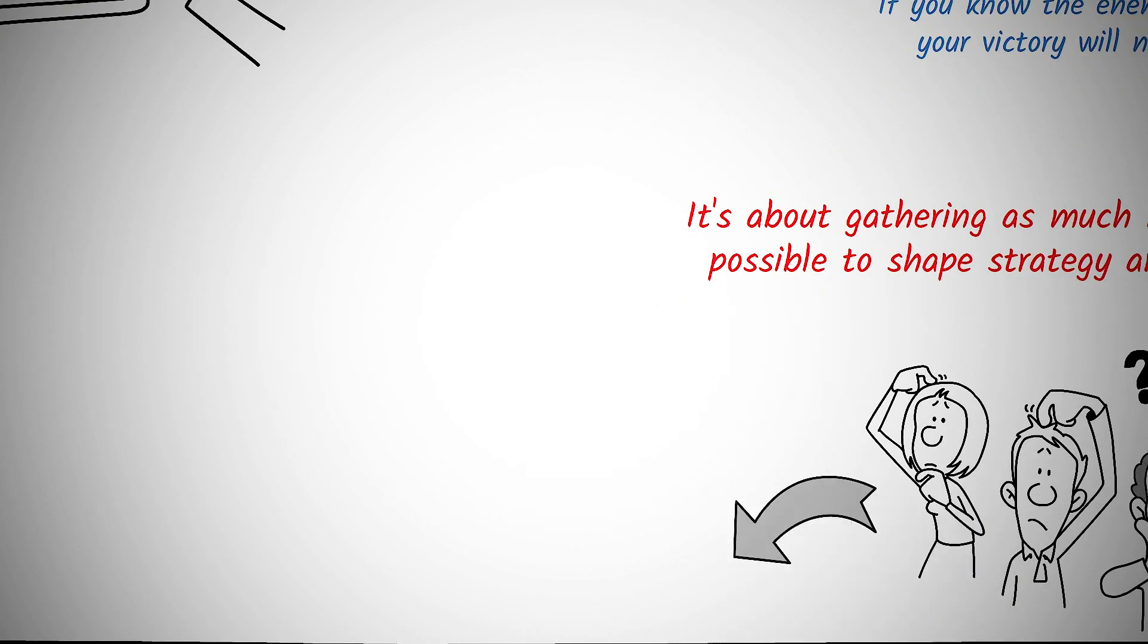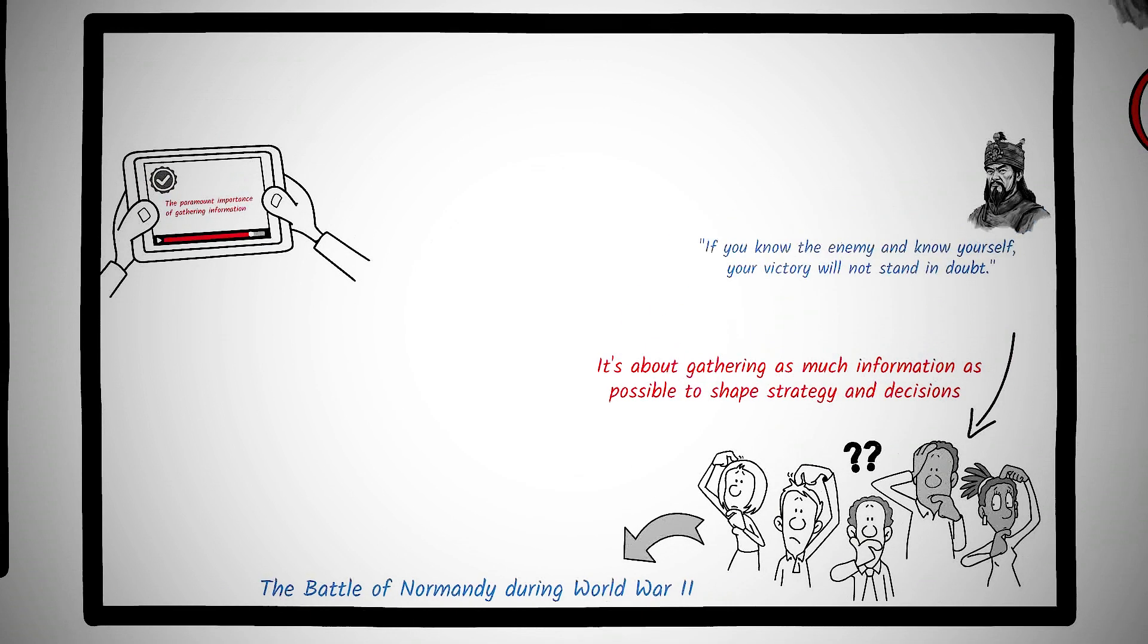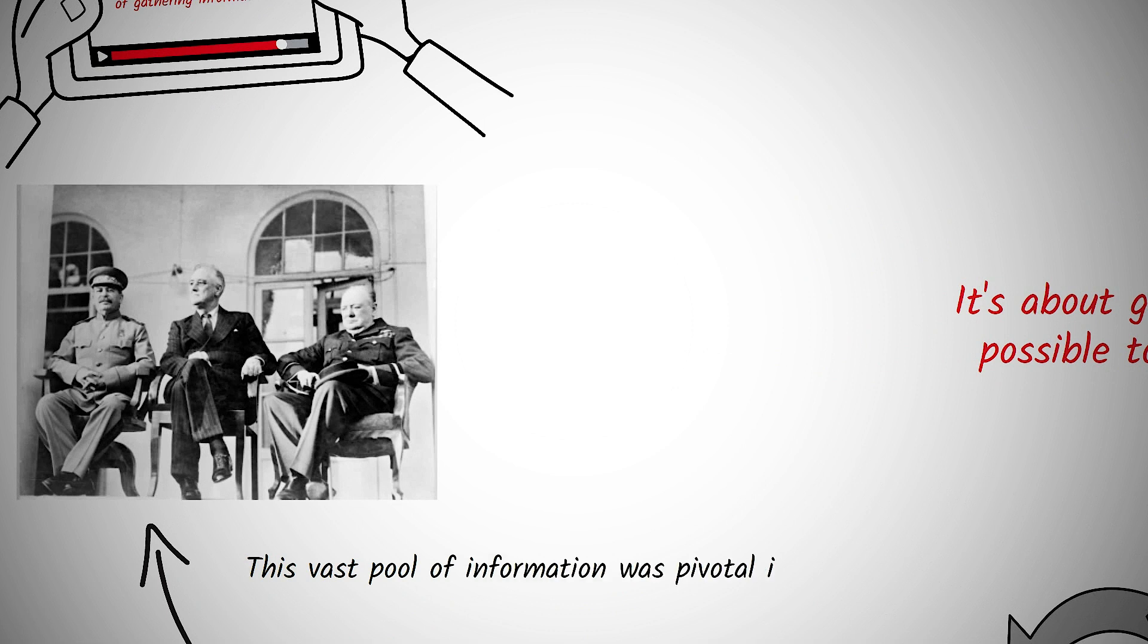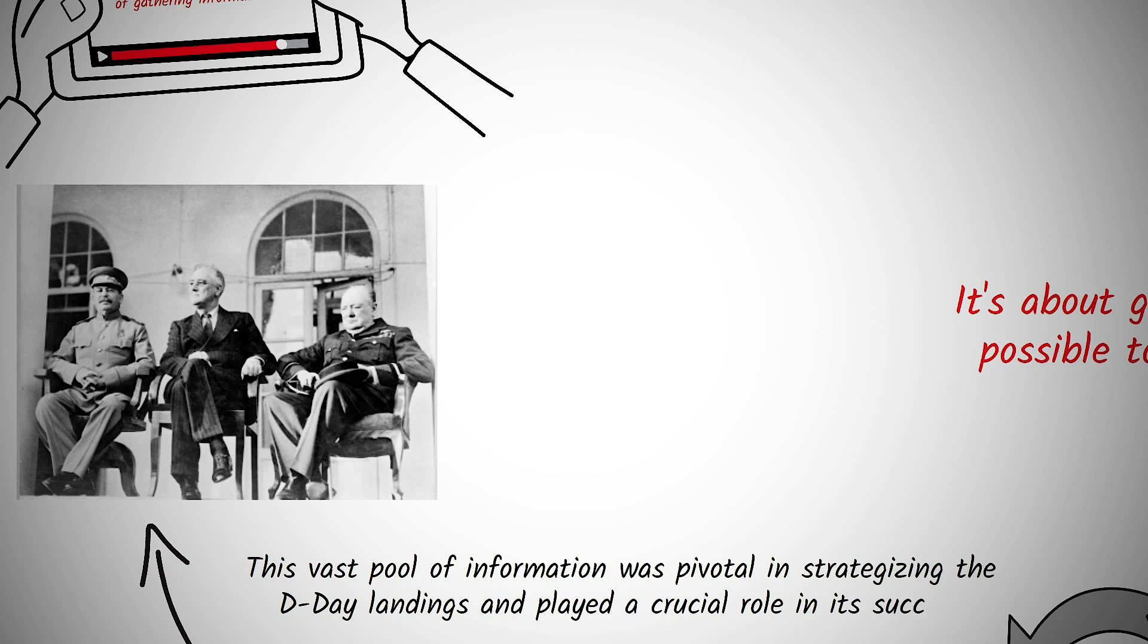An illustrative example from history can be seen in the Battle of Normandy during World War II. The Allied forces engaged in extensive reconnaissance and intelligence gathering, from deciphering encrypted messages to aerial photography. This vast pool of information was pivotal in strategizing the D-Day landings and played a crucial role in its success.